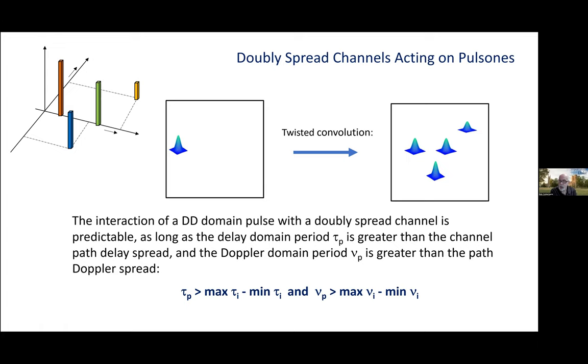Pulsones live on the hyperbola tau_p, nu_p equals 1. And they're going to be predictive if the fundamental period captures the channel spread. What does that mean? It means that the delay domain period tau_p is greater than the channel path delay spread. And the Doppler domain period nu_p is greater than the channel path Doppler spread.